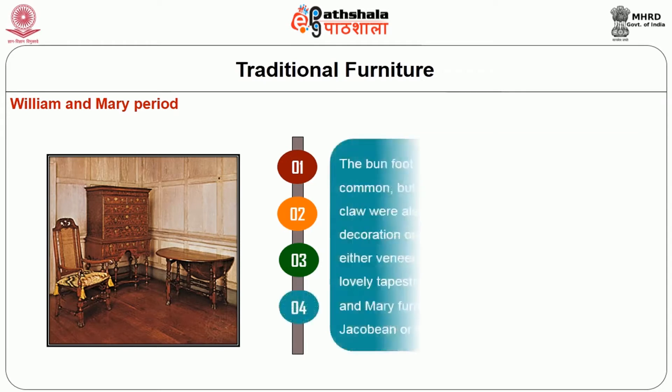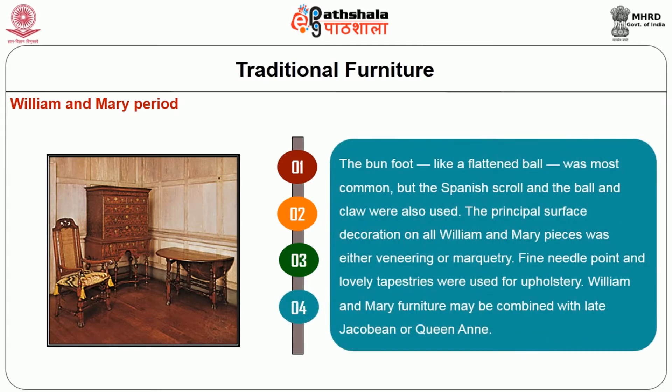The bun foot, like a flattened ball, was most common, but the Spanish scroll and the ball and claw were also used. The principal surface decoration on all William and Mary pieces was either veneering or marquetry. Fine needlepoint and lovely tapestries were used for upholstery. William and Mary furniture may be combined with late Jacobean or Queen Anne period furniture.